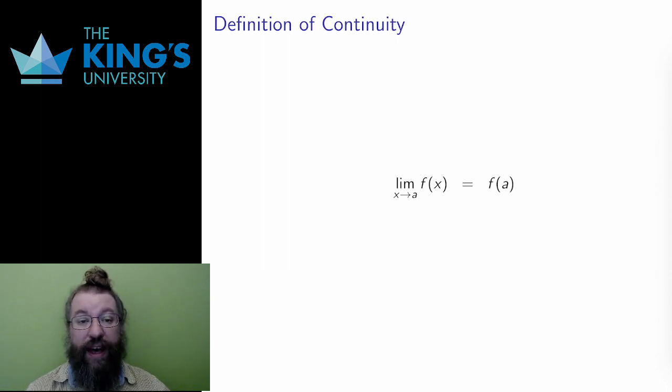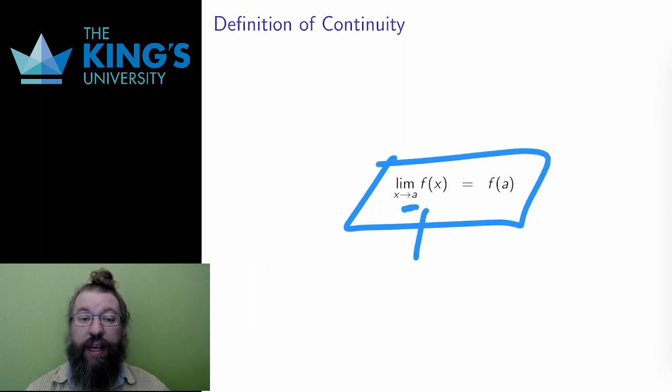This equation says that, at a point A in the domain of F, the limit approaching A and the value at A are the same. This is how mathematics expresses an unbroken line. What the function is approaching, getting close to, is the actual value of the function. The line approaching the point matches up with a function at that point, and that makes the function continuous at the point A.